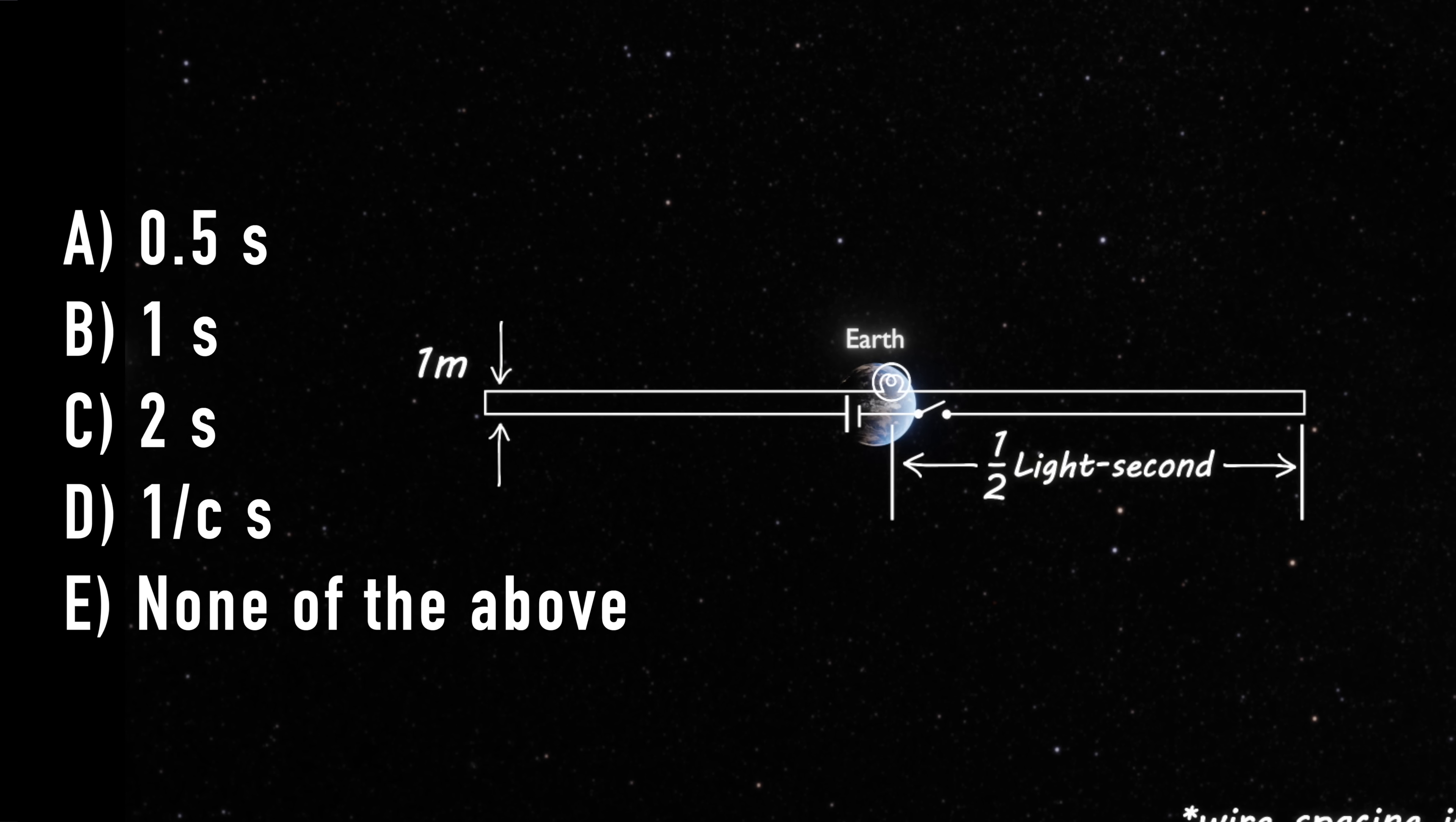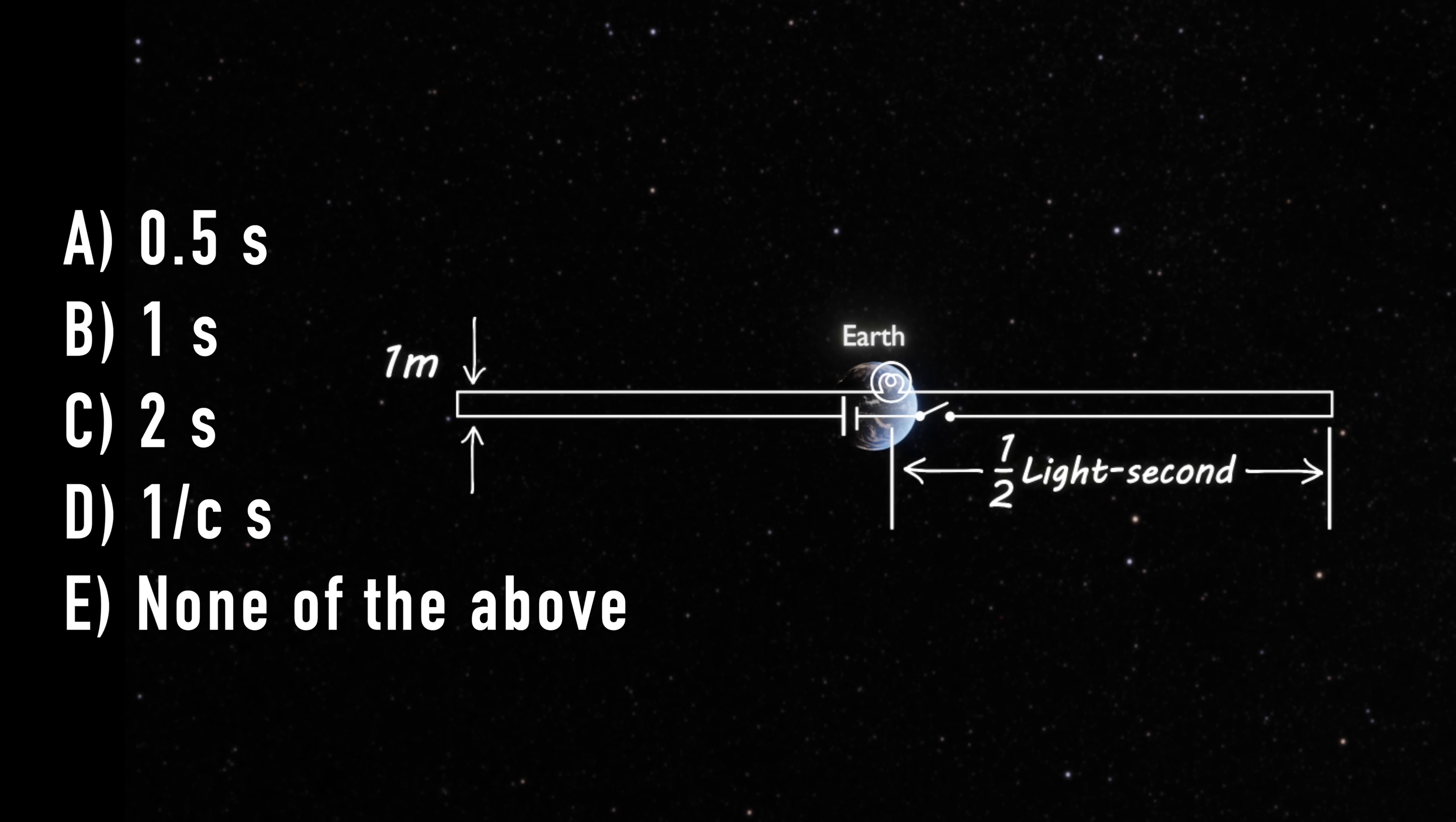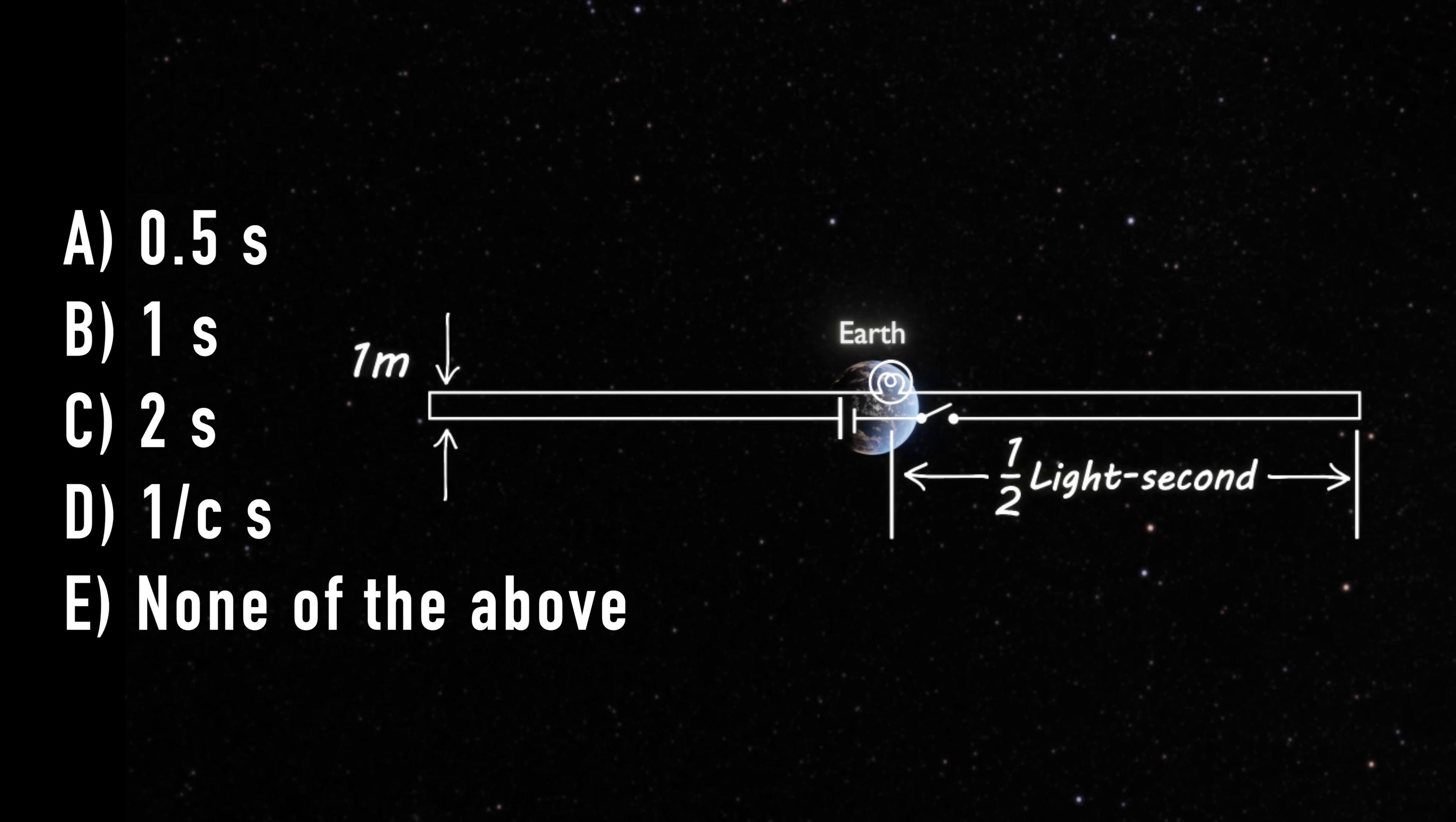Now you have to make some simplifying assumptions about this circuit like the wires have to have no resistance otherwise this wouldn't work and the light bulb has to turn on immediately when current passes through it. But I want you to commit to an answer and put it down in the comments so you can't say oh yeah I knew that was the answer when I tell you the answer later on.